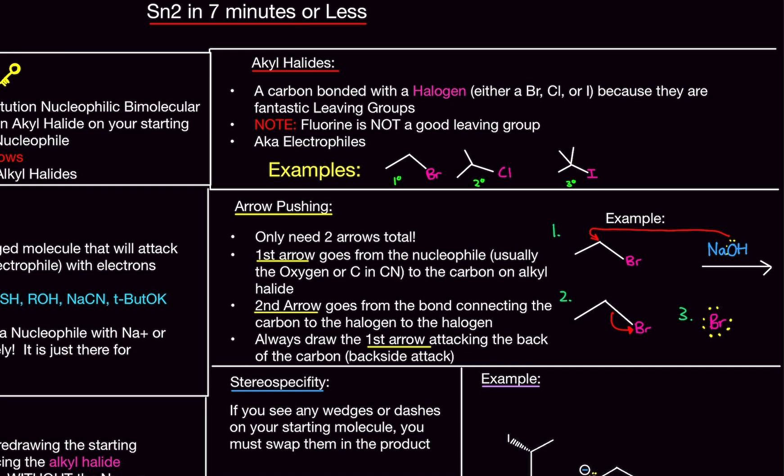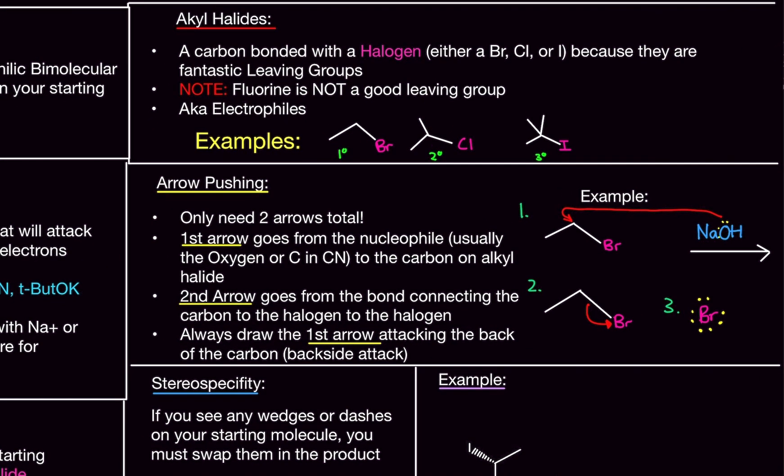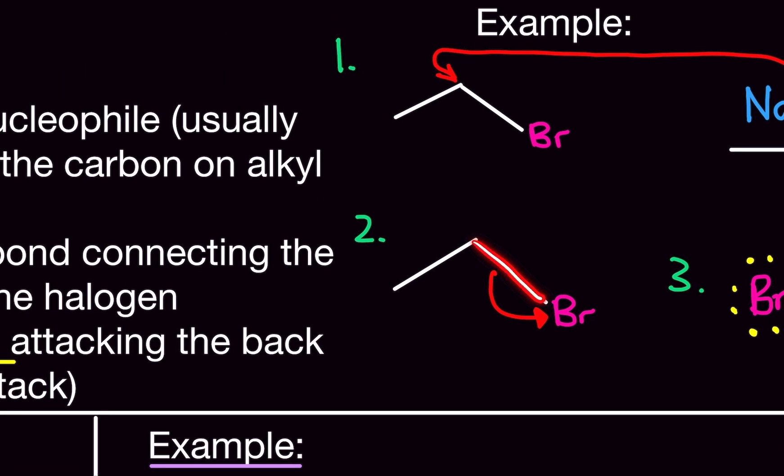So, now, the second arrow goes from the bond connecting the carbon and the halogen, which would be right here. This is the carbon. This is the halogen. This is the bond connecting to it. So, it goes from the bond connecting to it to the halogen. So, from here, right, we start, the arrow starts here, going from the bond, heading towards the halogen.